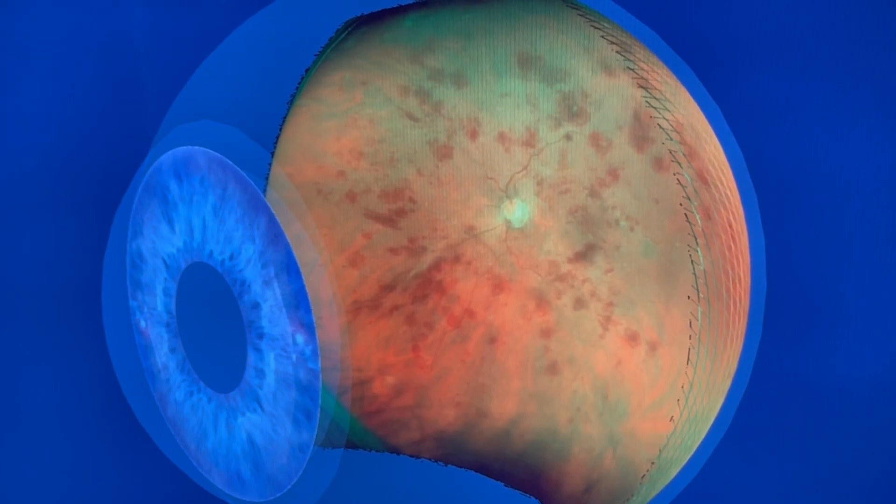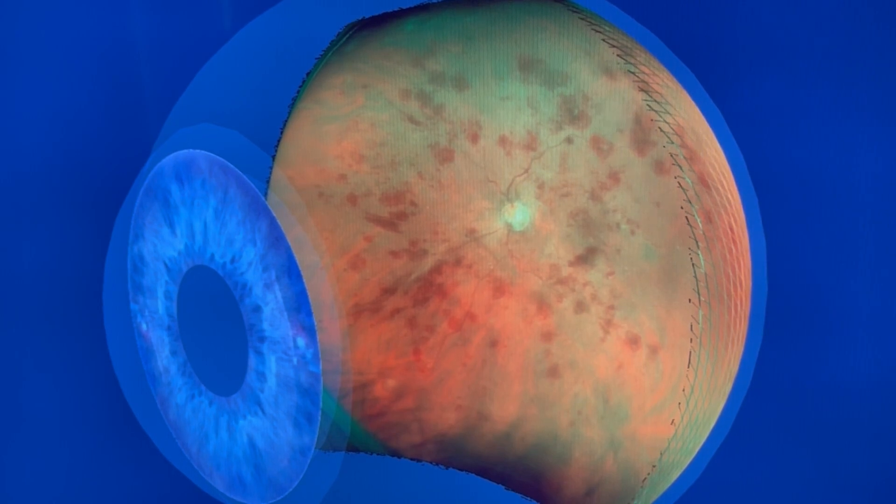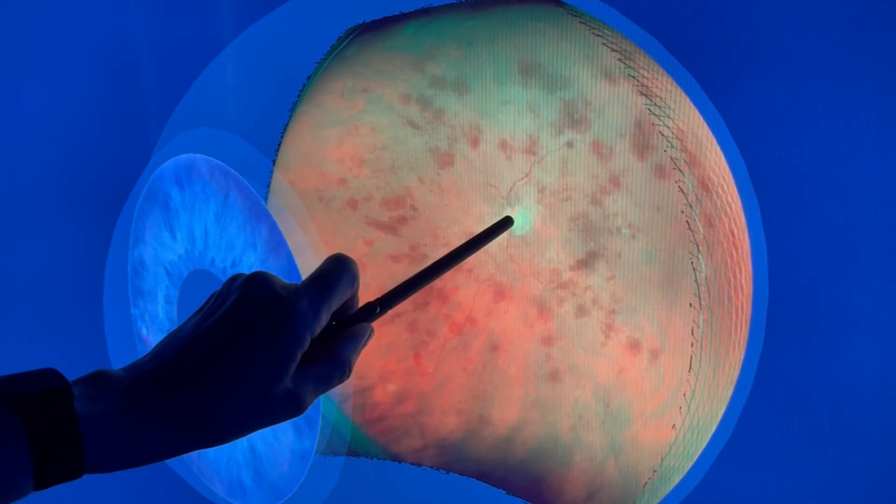This is a patient who has a central retinal vein occlusion. Unfortunately, the eye is not designed all that well in that all the blood drains out of the central retinal vein which is located right here.